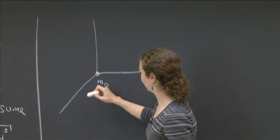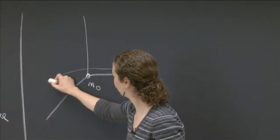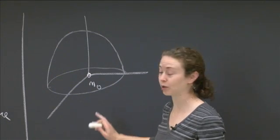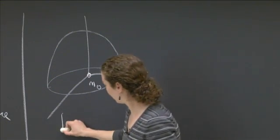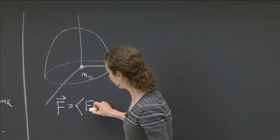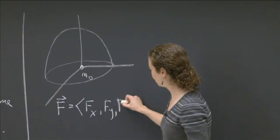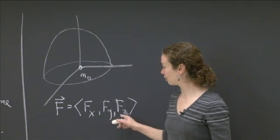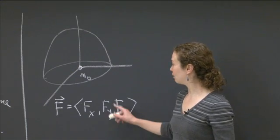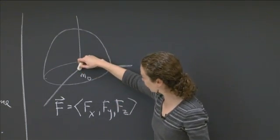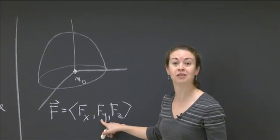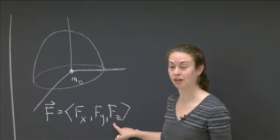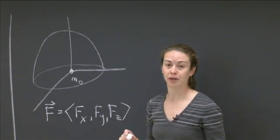I'm going to have the solid half sphere, which I'll draw sort of like this. It's exerting a force on m0. If I want to know the force, the components are the x component of the force, the y component, and the z component. These are not partial derivatives — this is the standard notation for force. Because of where m0 is, the x component and the y component of the force are 0 based on symmetry. So all I really need to worry about is the z component.